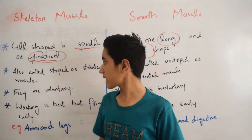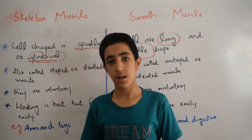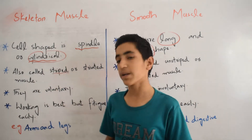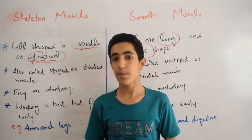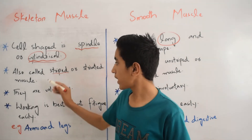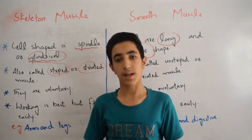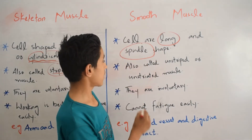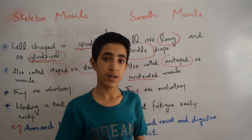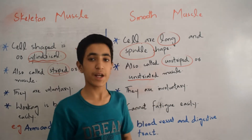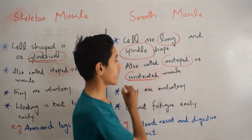The second difference is that skeletal muscle is also called striped or striated muscle. Why is it called striped and striated? Because they show alternate light and dark bands. While smooth muscle is also called unstriped or unstriated muscle — they do not show alternate light and dark bands, so therefore it is called unstriped or unstriated muscle.